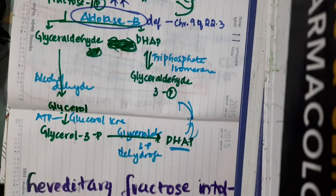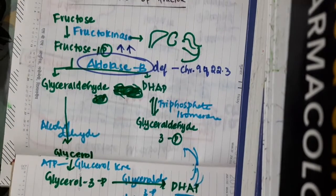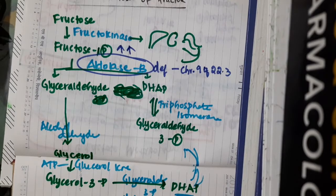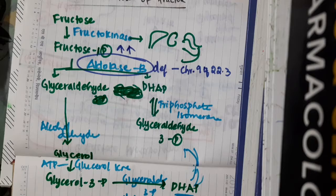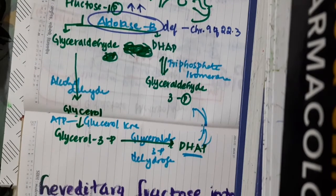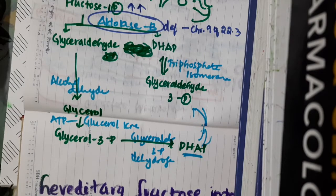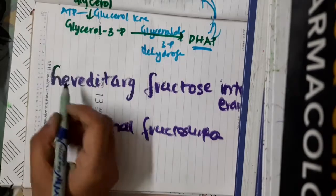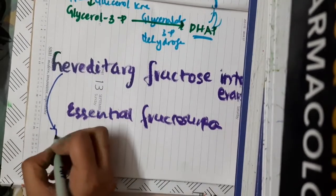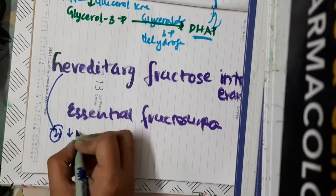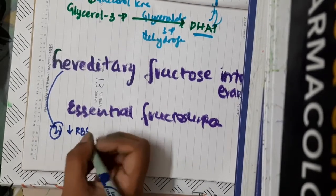Symptoms occur immediately after ingestion of fructose — once the baby eats fruits or sugar, the baby suffers from vomiting, hypoglycemia, and slowly develops failure to thrive, irritability, abdominal distension, and even hepatomegaly.